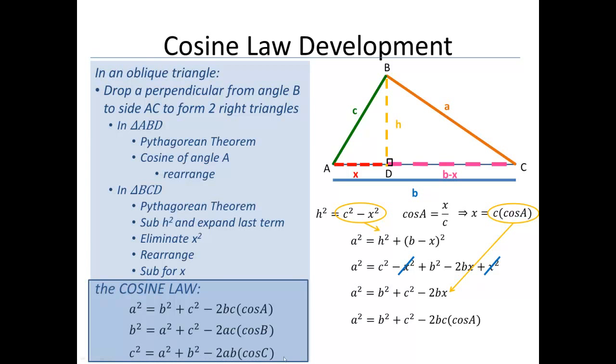And the last version of the cosine law, C squared. Since C is on this side, A and B are on the right. A and B show up here. And angle C is here. And those are our three versions of the cosine law.